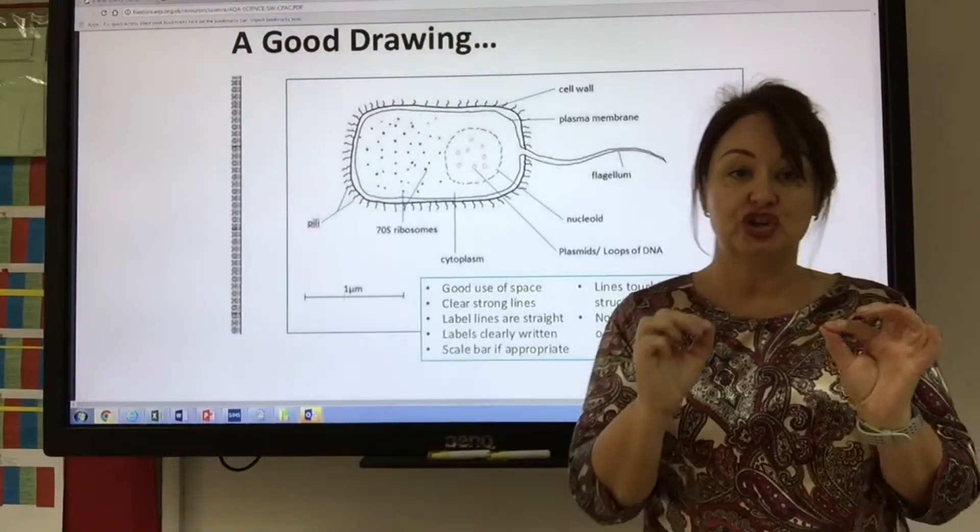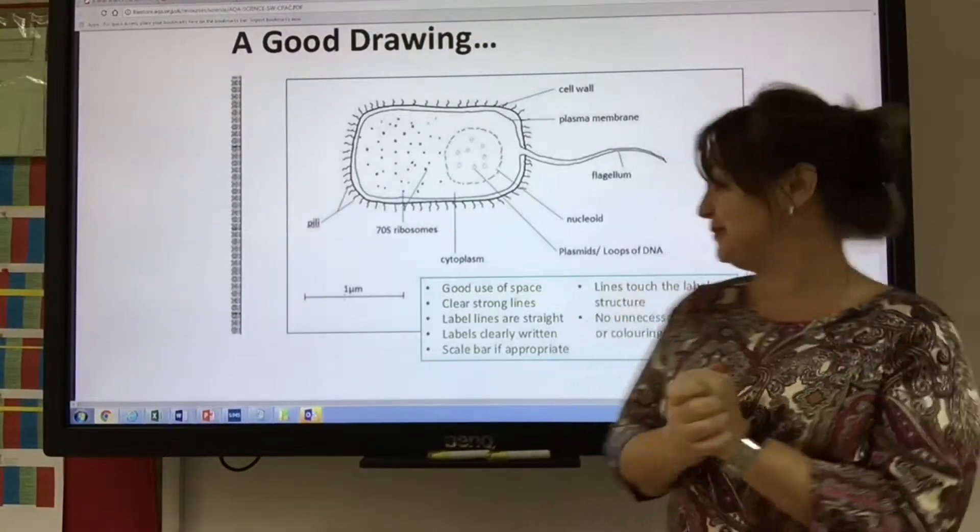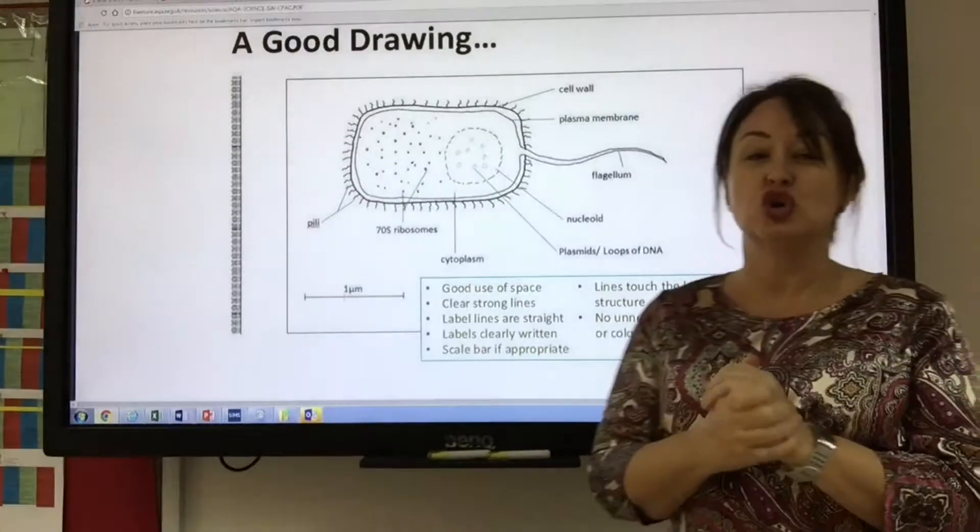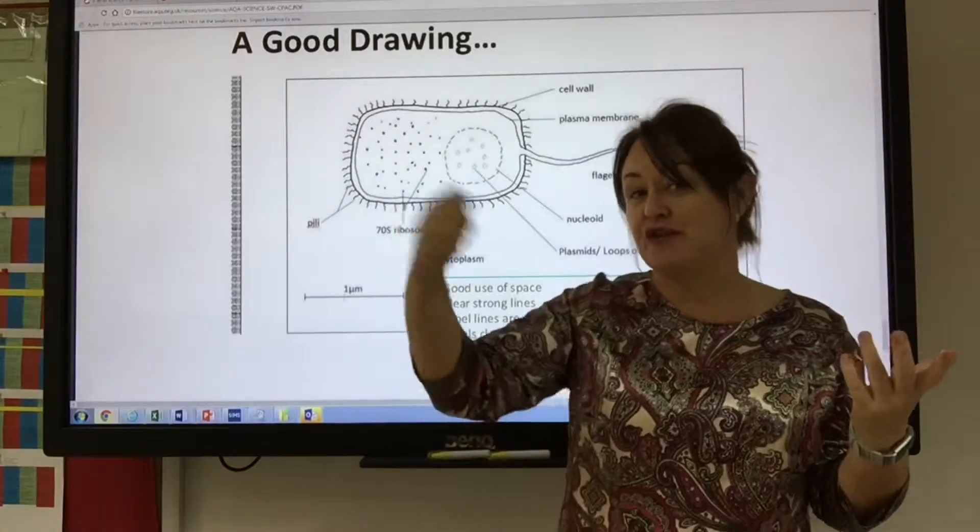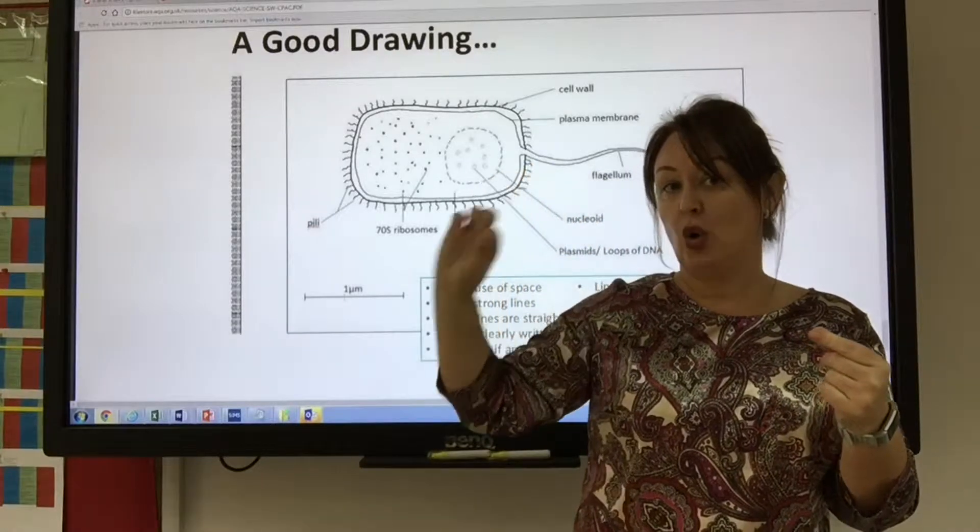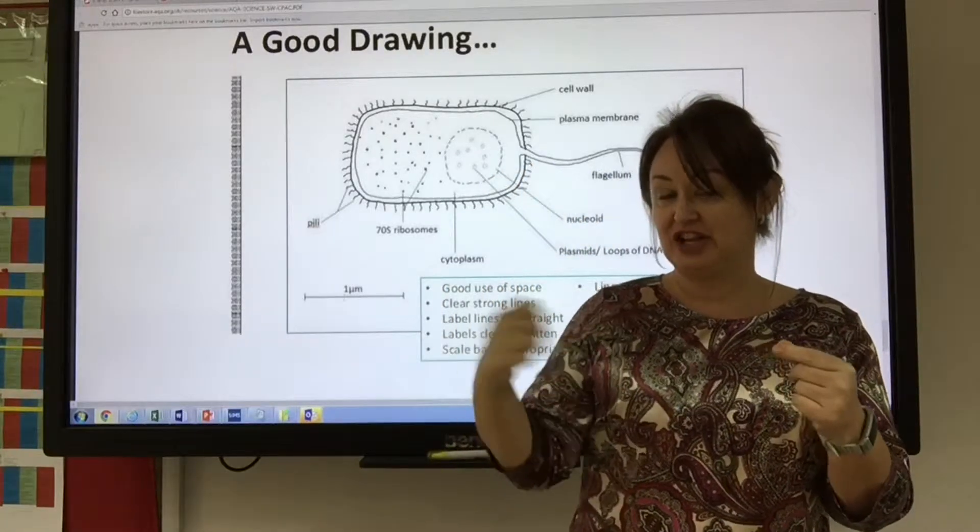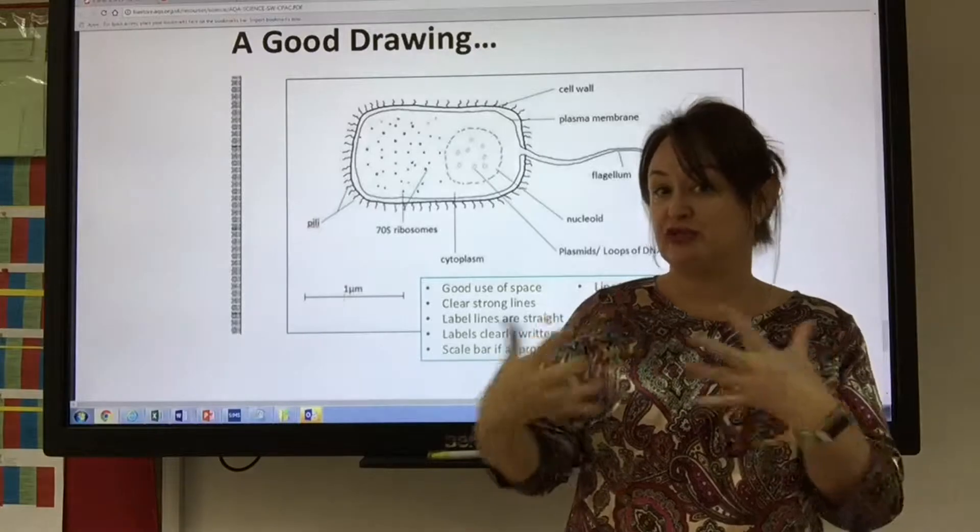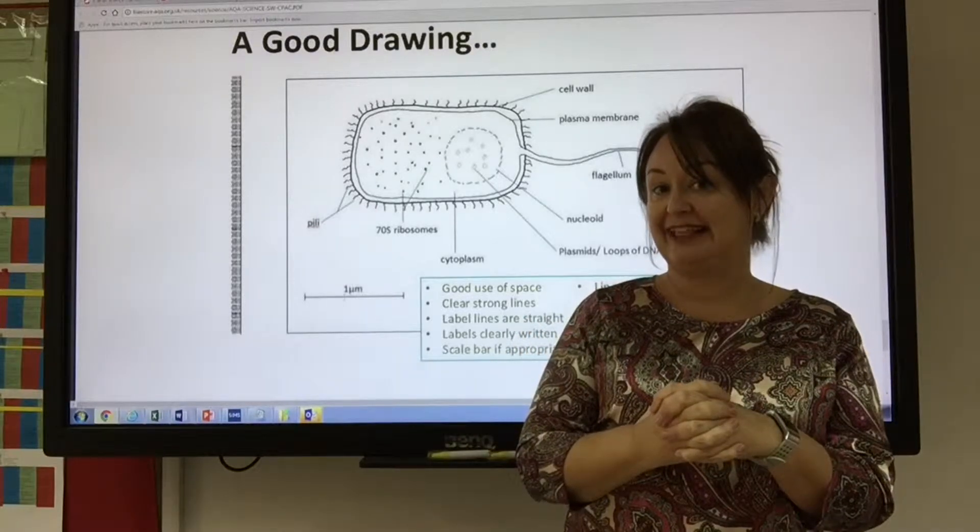Lines should actually touch the structure that you're labeling. And of course, no shading, no feathery lines. They should be a single pencil line all the way through. Definitely no shading, no 3D or anything like that.